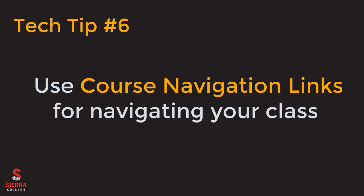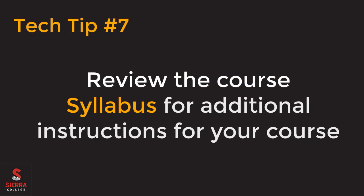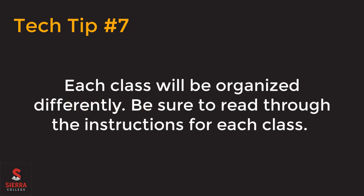Tech Tip number six: use the course navigation links in your class. If you are following along, please click on a class that displays on your dashboard. Course navigation links are often referred to as blue links. These links will help you navigate around your online classroom. Each class will have a different set of blue links based on what the instructor has added for you. You can show and hide the course navigation links by clicking on the hamburger menu next to the class name. Tech Tip number seven: make sure you read and understand the syllabus for each class. The syllabus will contain very important information and instructions for your success. Remember, each class is different, so please familiarize yourself with each class syllabus.